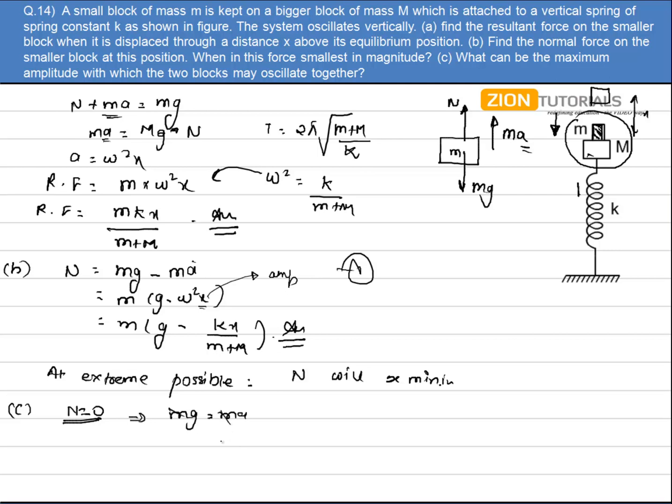So g is equal to acceleration, that is omega square of amplitude. Omega square is given as k by small m plus capital M. So amplitude comes out as g times m plus capital M by k. That is the answer.